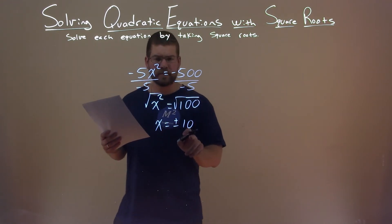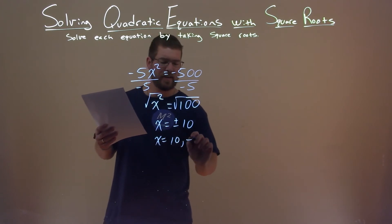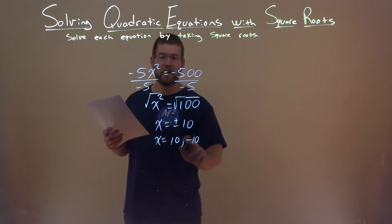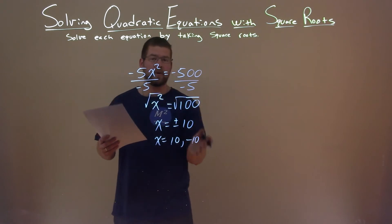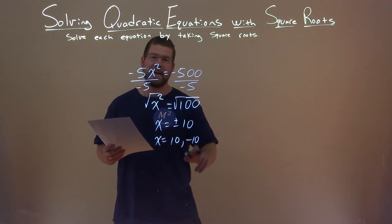Now, that plus or minus 10 here gives the same thing as saying x equals positive 10 and negative 10. So 10 and negative 10 are the two solutions that work for our equation. So again, our final answer here is x equals 10 and negative 10.